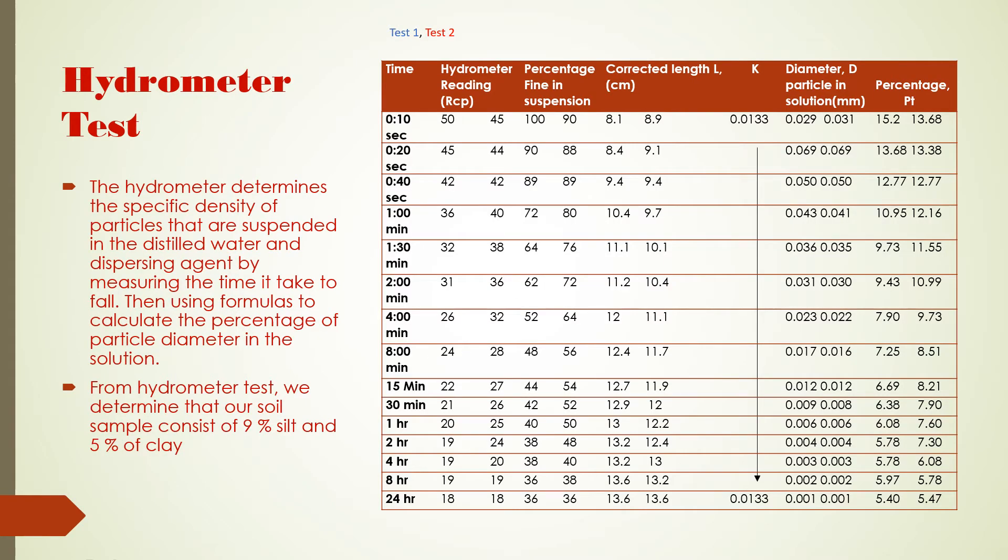Hydrometer test. The hydrometer determines the specific density of particles that are suspended in distilled water and dispersing agent by measuring the time it takes to fall, then using the formulas to calculate the percentage of the particle diameter in the solution. From the hydrometer test, we determined that our soil sample consists of 9% silt and 5% clay.